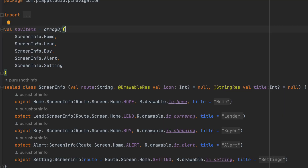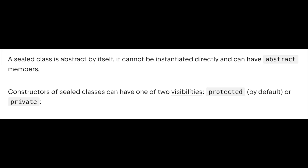The sealed class is more or less the same kind as an abstract class. In the abstract class, you can define it in different packages. But in the sealed class, it is restricted — subclasses must be defined within the same file. That is the main difference.